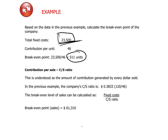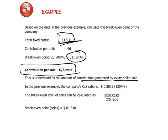Today we want to take this forward one step to get familiar with the idea of a contribution per sale — the CS ratio. The CS ratio is the amount of contribution generated for every dollar of sale that we achieve.